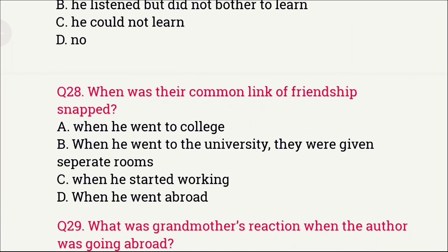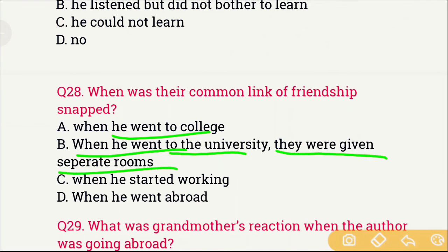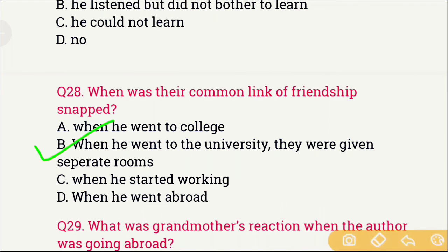Question number 28 concerns the common link to their friendship. When the author went to university, they were given separate rooms. The author and the grandmother had a common room as their shared bond, but when the author grew up and went to university, he got a separate room, and that common link to their friendship was lost.